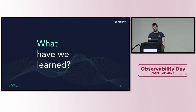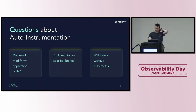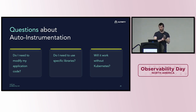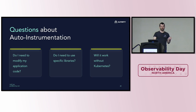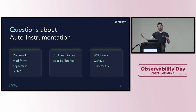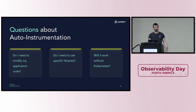Have we learned how to answer our questions? Do I need to modify my application code? Probably not. Do I need to use specific libraries? Yes — you need to be using one of the instrumented libraries. Caveat: some auto-instrumentation agents, like the .NET agent, provide instrumentation beyond what the library instrumentations cover. You may have to check the contrib library or just ask someone in Slack. And will it work without Kubernetes? Yes — you can use it in Docker or by just setting environment variables and modifying your runtime.